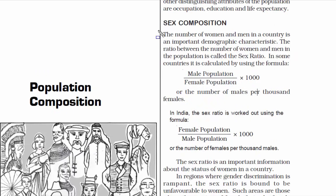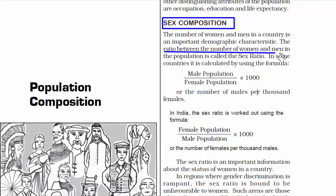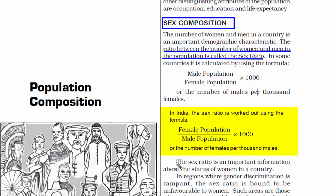The first topic is sex composition. The ratio between the number of women and men in the population is called the sex ratio. To calculate it, we find the number of women in a particular place and then the number of men. We then divide women by men and multiply by 1,000.